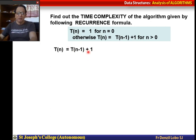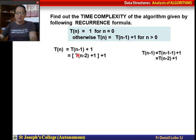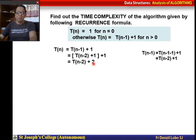We substitute T(n-1): T(n-1) = T(n-2) + 1, so T(n) becomes T(n-2) + 1 + 1. Substituting again, wherever there is n we substitute n-1, and the whole formula is repeated, giving T(n-2) + 2, since 1 + 1 = 2.